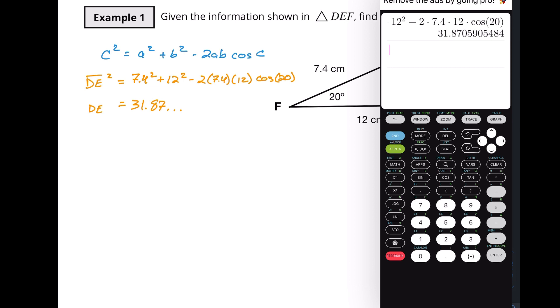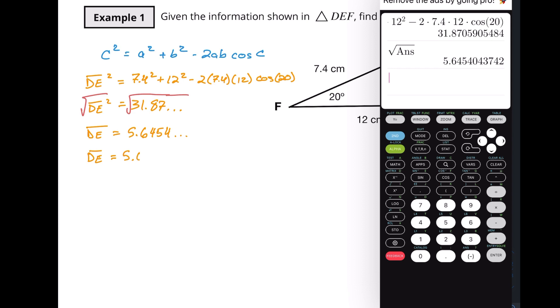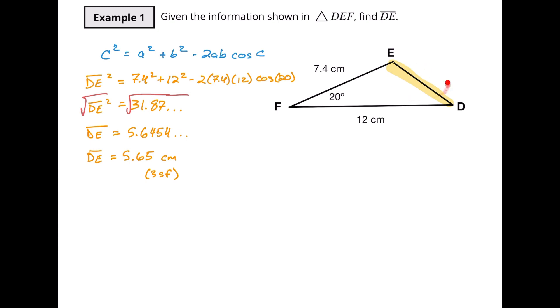That gives me 31.87... So I'm going to put the dots in there to make sure I know it's a long drawn-out decimal and I want to use that whole thing when solving for my final answer. Because this is DE squared, I need to take the square root of both sides, including all those dots. DE equals the square root of my answer: 5.6454... Rounding to three significant figures, that's 5.65 centimeters. Always make sure you're rounding properly — don't truncate the values.